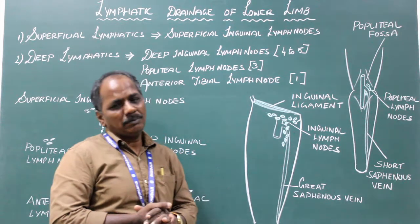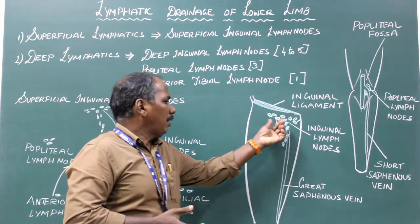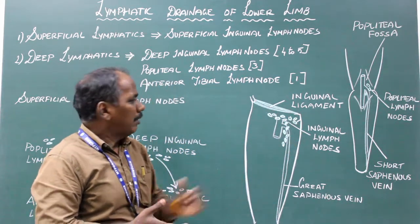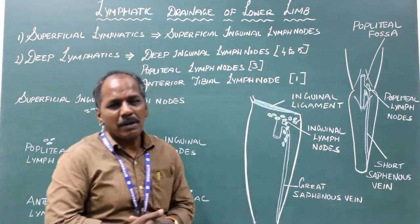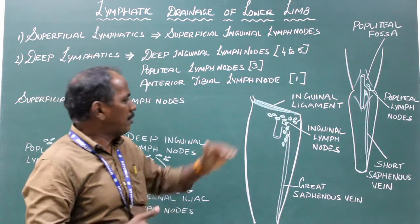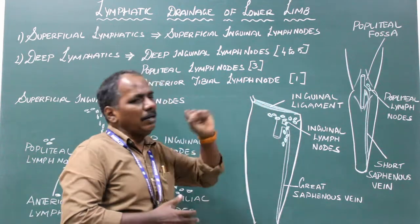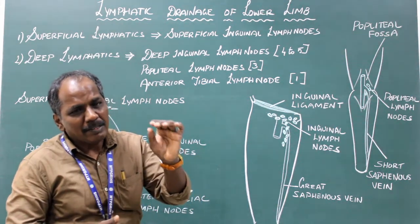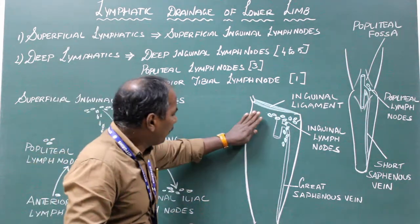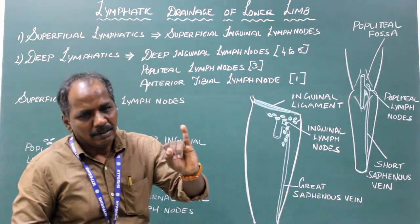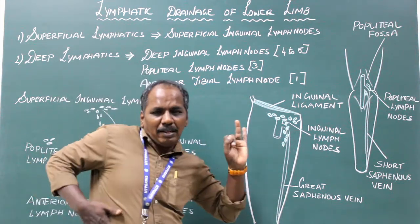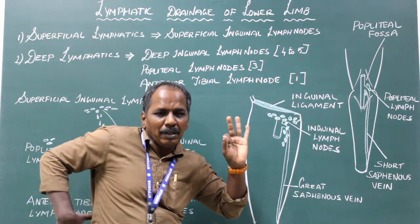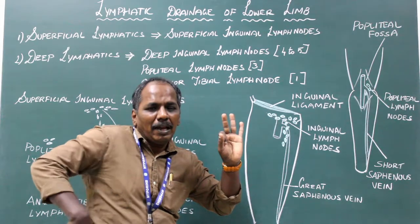The horizontal group consists of two subgroups: a lateral group and a medial group. The lateral group consists of two or three nodes present below the lateral part of the inguinal ligament. It drains lymphatics from the upper part of the lateral side of the thigh, and the flank and back of the body below the umbilical line.